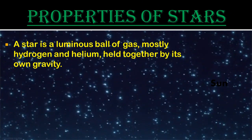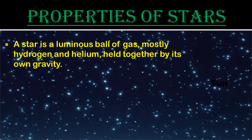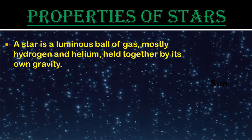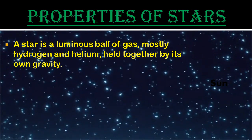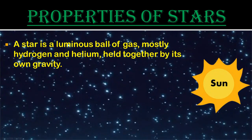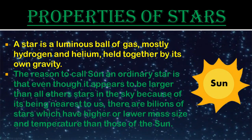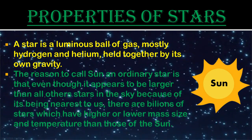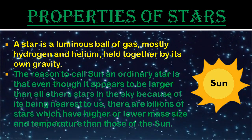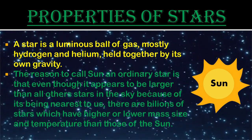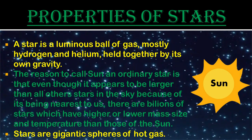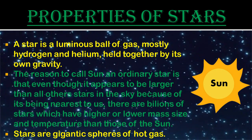A star is a luminous ball of gas — mostly hydrogen and helium — held together by its own gravity. At night we can see about 4,000 stars with our naked eyes, and the Sun is an ordinary star among them. The Sun appears larger than other stars only because it is nearest to us. There are billions of stars with higher or lower mass, size, and temperature than the Sun. Stars are gigantic spheres of hot gases.